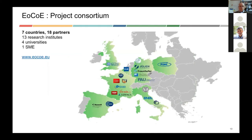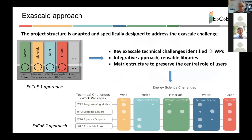ECHO is now in the second phase. It is organized around a strong French and German hub; most partners are from Germany and France, with the leader coming from CEA and the second most important partner being Jülich. There are also partners from Spain, Italy, Poland, Belgium and the United Kingdom. In ECHO-1, there were four work packages: meteorology, materials, water and fusion. Wind was included within meteorology, but actually there wasn't much scientific intersection between those two areas.